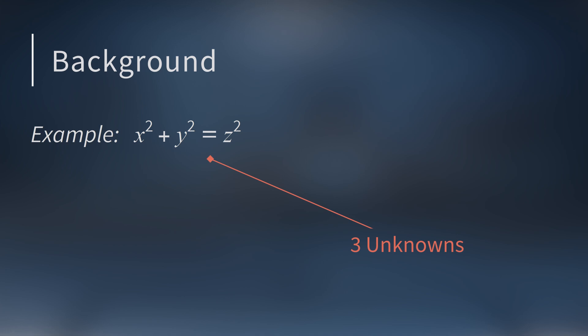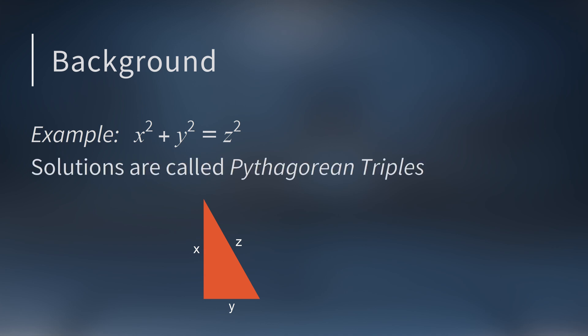One famous example is the Diophantine equation x² + y² = z². This is a Diophantine equation with three unknowns: x, y, and z. For positive integers, this is just the Pythagorean theorem. Each solution where all the numbers are positive form the sides of a right triangle. For this reason, solutions to this equation are also called Pythagorean triples. There are infinitely many integer solutions to this equation. One well-known solution is 3, 4, 5. Another is 5, 12, and 13.